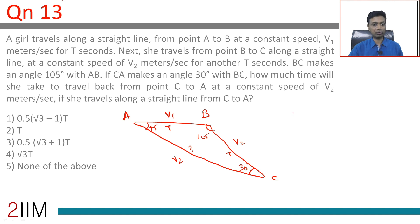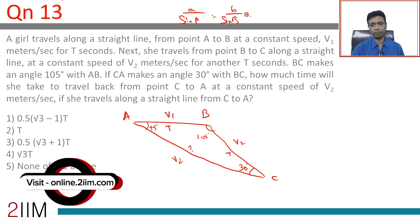She is traveling at a speed of V2. So V2 for T seconds, V2 for how much seconds? So we know the famous rule which is A by sin A equals B by sin B equals C by sin C.